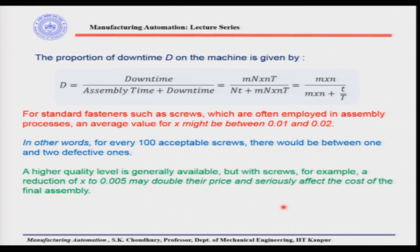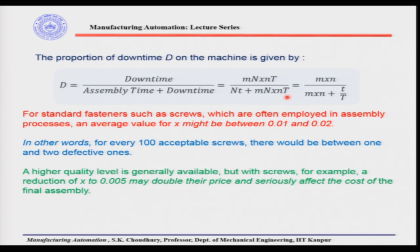We can find out the proportion of downtime, which is downtime divided by total time, where total time is assembly time plus downtime. This simplifies to m·n·x·N·T divided by (N·t + m·n·x·N·T). For standard fasteners, x is somewhere around 0.01 to 0.02, which is the quality level.